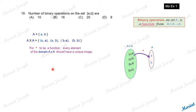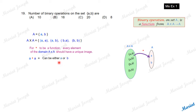For star to be a function, every element of the domain A cross A should have a unique image. Now, the first ordered pair A comma A — you can choose one of these images, either A or B, but only one at a time. This can be done in two ways.